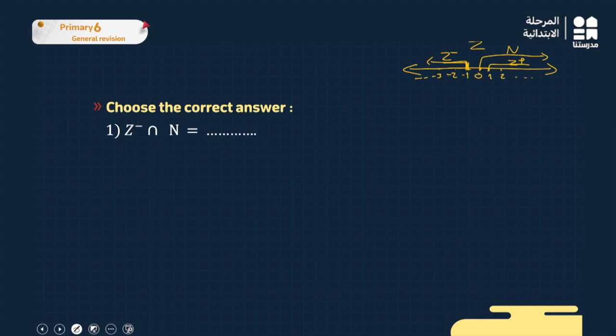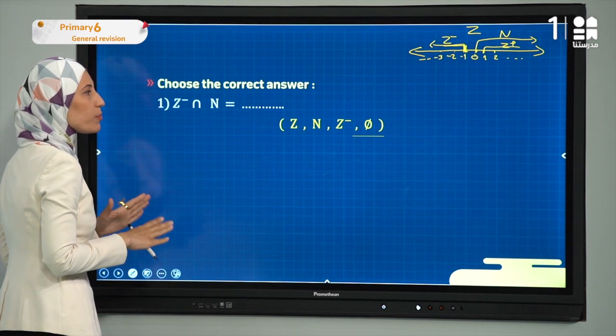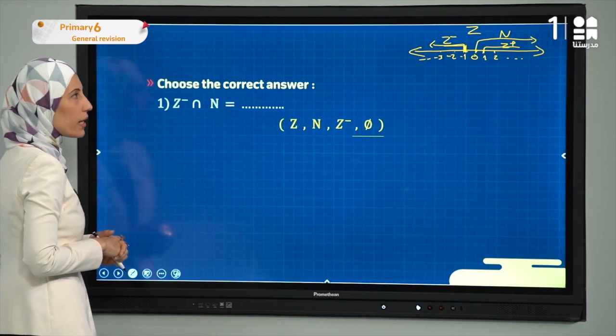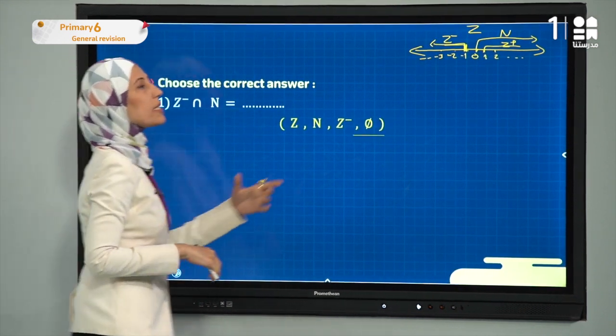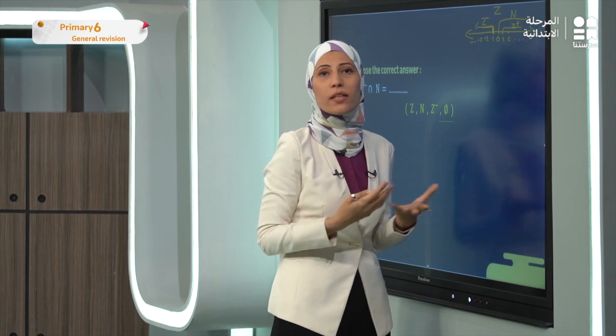There is no intersection between Z-negative and N, so the answer is the empty set. I will choose the empty set because there are no numbers common to both Z-negative and N.